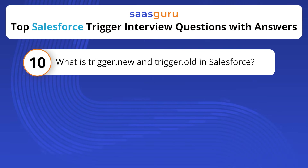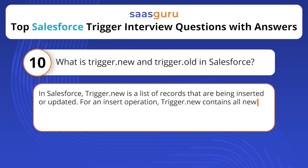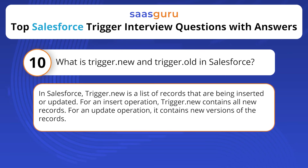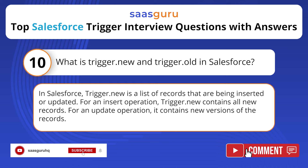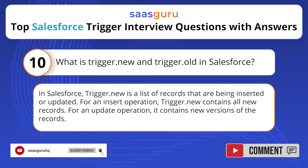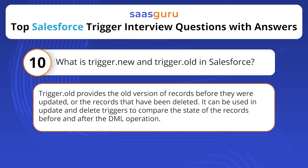What is trigger.new and trigger.old in Salesforce? trigger.new is a list of records that are being inserted or updated. For an insert operation, trigger.new contains all new records; for an update operation, it contains the new versions of the records. trigger.old provides the old version of records before they were updated, or the records that have been deleted. It can be used in update and delete triggers to compare the state of records before and after the DML operation.